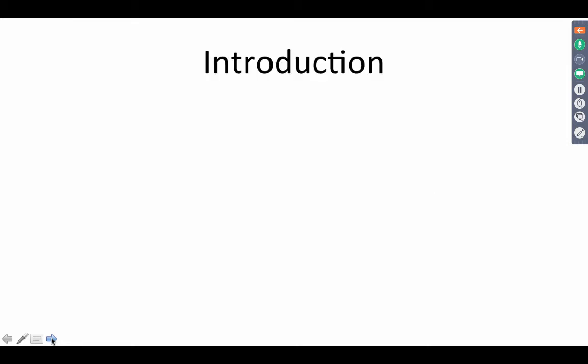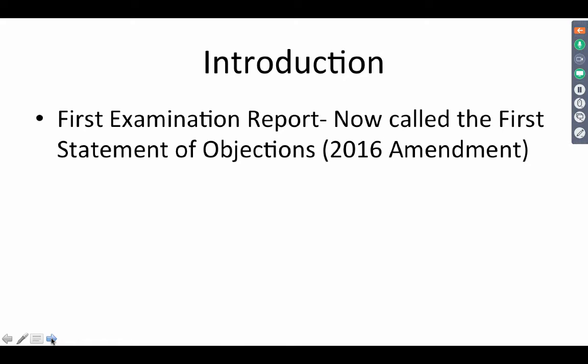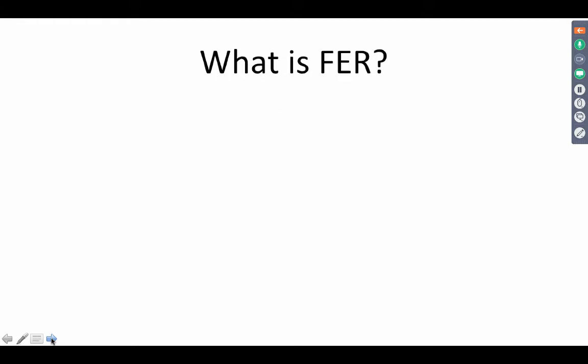The first examination report is now called the first statement of objections. This was introduced by the 2016 amendment. Before the 2016 amendment to the rules, there was a reference to the first statement of objections in the language of section 21, but the rules did not comply with that language. Only after the recent amendment do the rules call the first examination report the first statement of objections. The relevant rule that mentions it now is section 24B(3).